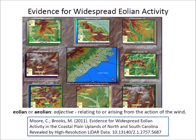A conference paper presented by Christopher Moore and Mark Brooks in 2011 identified many long parabolic dunes and nested parabolic dunes in the upper and middle coastal plain uplands of North and South Carolina. The sand source for many of these dune deposits appears to be derived mainly from first-order streams, which are the smallest tributaries of rivers. The authors state that the dunes are aeolian in origin and appear associated with dominant westerly winds.